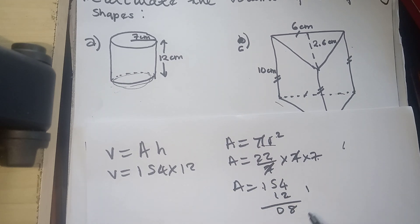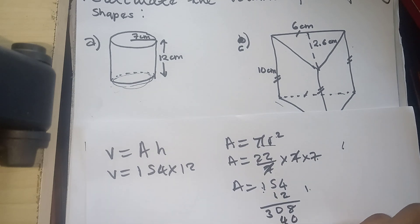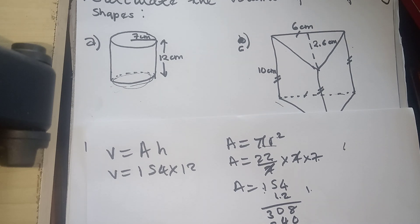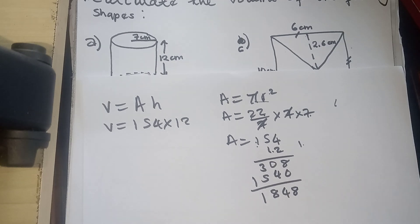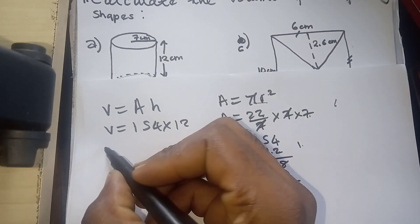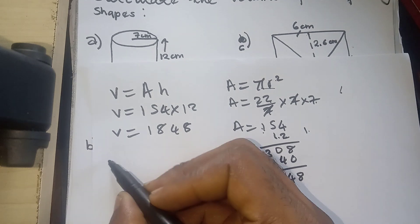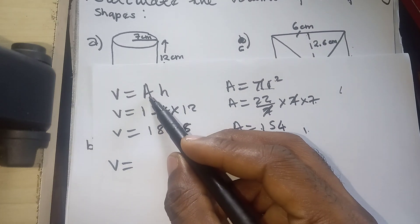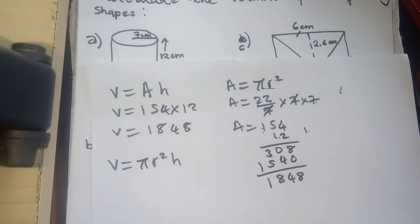Multiplying 12 by 154: 2 times 4 is 8, 2 times 5 is 10, put zero carry 1, 2 times 4 is 8, plus 1 is 9... working through the multiplication gives us 1848. So our volume will be 1848. If you don't want to do it like this, it's pretty much the same — you can use the formula and just substitute pi r squared h directly.